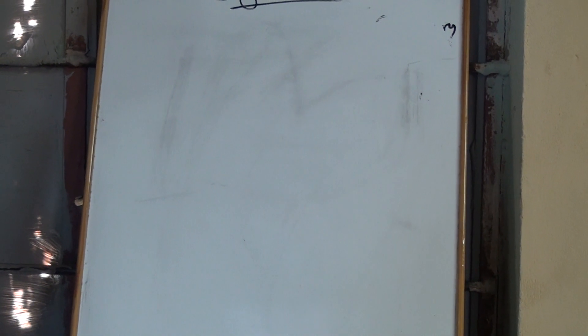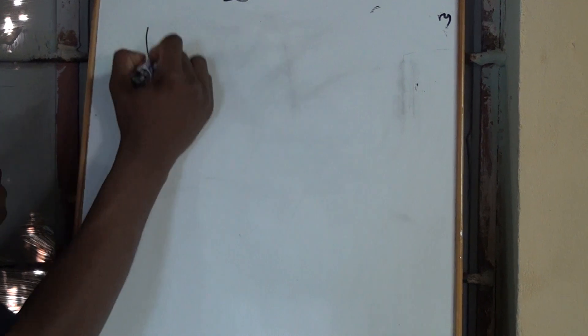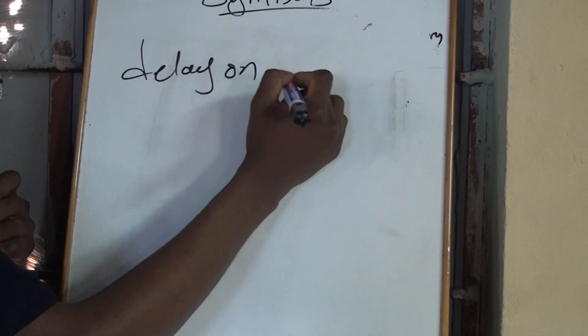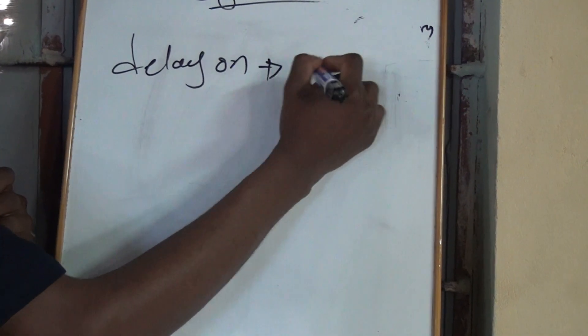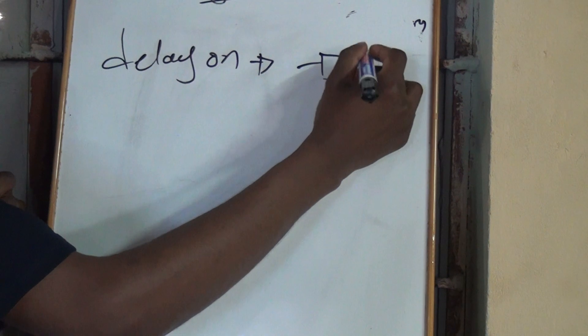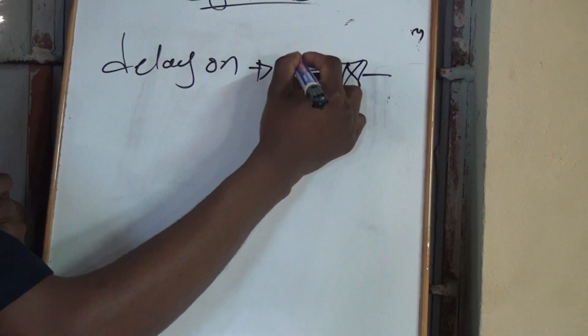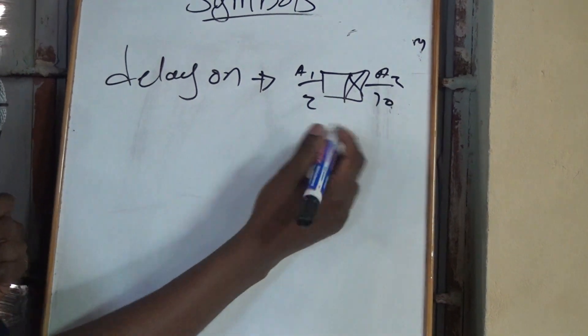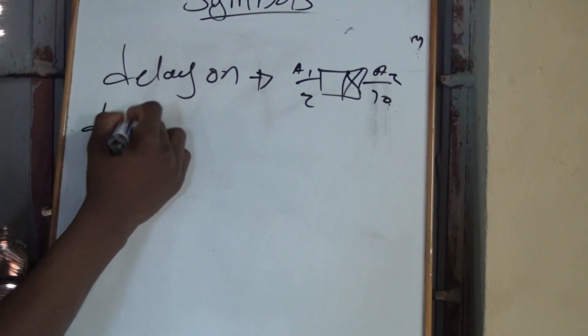Now let's look at the timers. The first timer we'll look at is the delay-on timer. This is how you draw the coil of a delay-on timer — that's your A1 and A2, or you can label it 2 and 10. That's still fine.